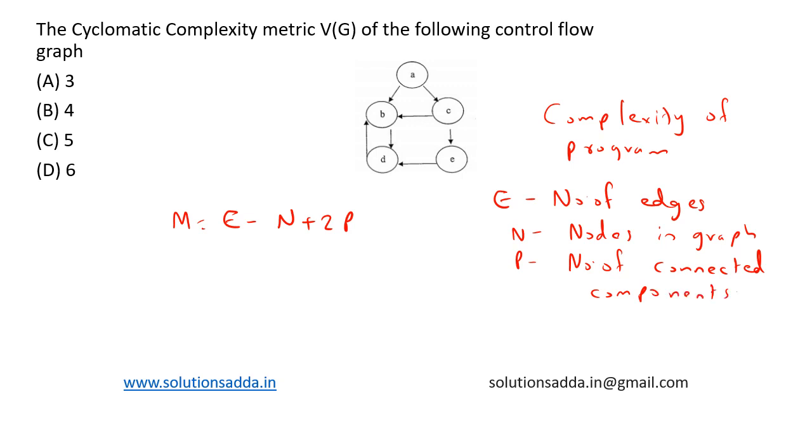Let's find the cyclomatic complexity of this control flow graph. The number of nodes are 1, 2, 3, 4, and 5, so N equals 5. The number of edges are 1, 2, 3, 4...